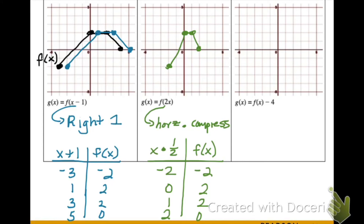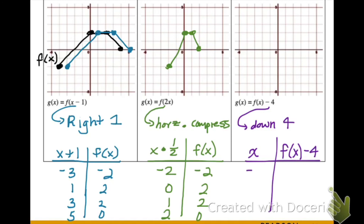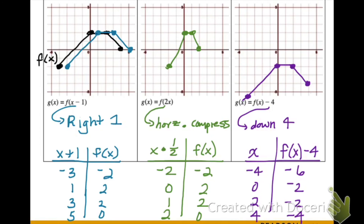Our last example has a negative four on the outside, which is going to shift all our y values down four since it is outside of the function. So our x values stay the same — negative four, zero, two, and four — but all y values shift down four. Plotting these new points, comparing the black to the purple graph, the x values stay exactly the same but the y values have just been shifted down four.